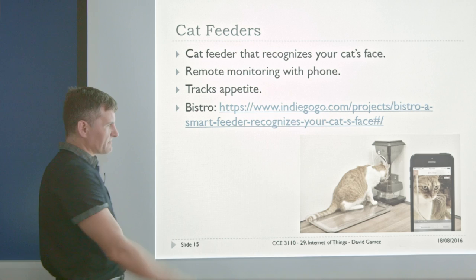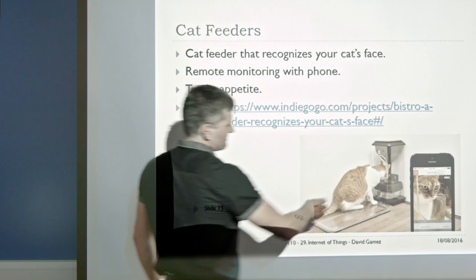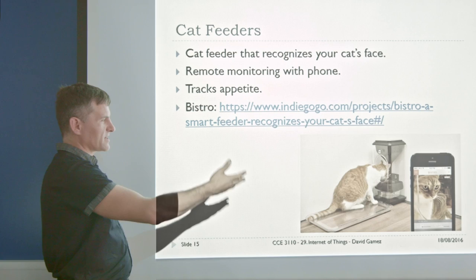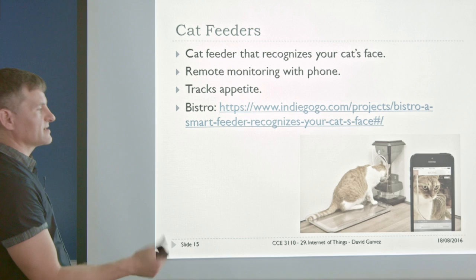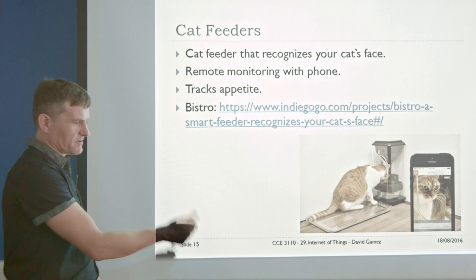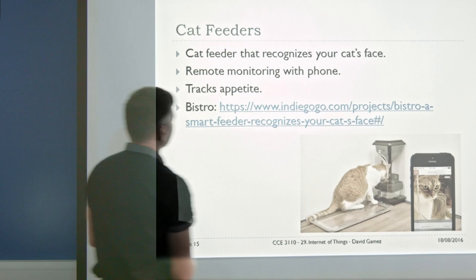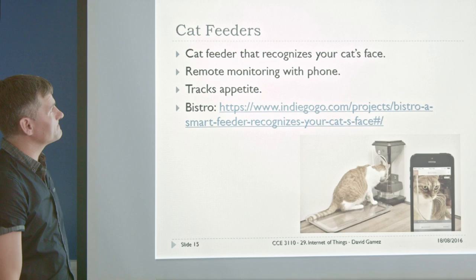We even have intelligent cat feeders now — all part of the glories of modern civilisation. These can recognise your cat's face, so other cats coming through the cat flap won't be recognised and won't get any food. You can watch your cat having its dinner. If you're sitting on the beach, you can fish out your phone and check your cat's having a nice feed. It tracks appetite and weight.